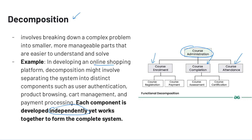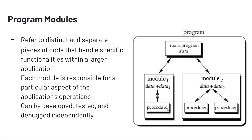For an online shopping platform, decomposition might involve separating that system into components for user authentication, product browsing, cart management, and payment processing. This has two implications for our software programs. First, it's going to influence our planning phase — we take one large problem, one large software program, and divide it into individual components. When we're actually doing the coding, we want to build these programs component by component, independently from each other, in essentially a modular fashion using program modules.